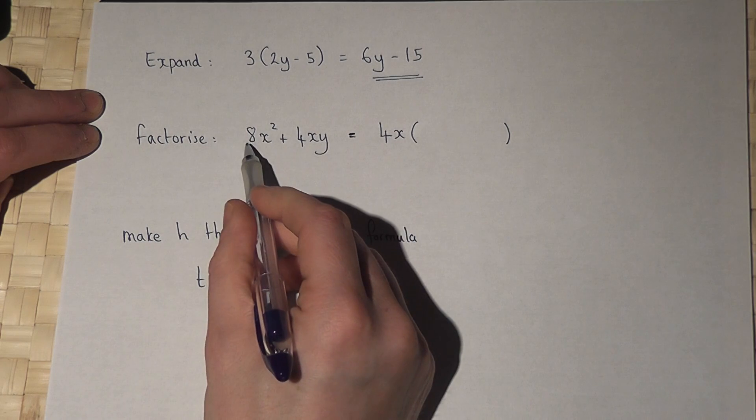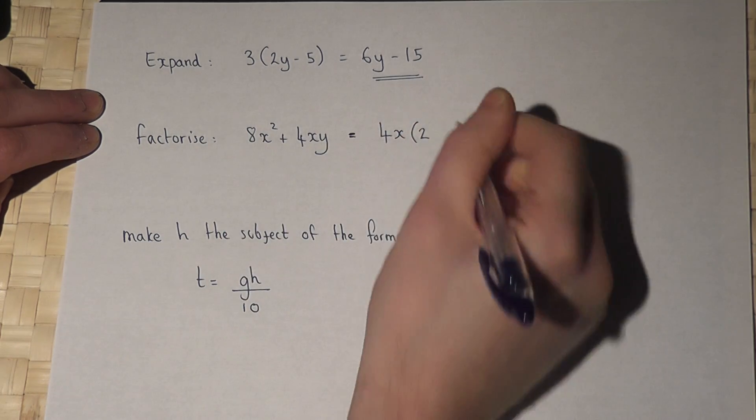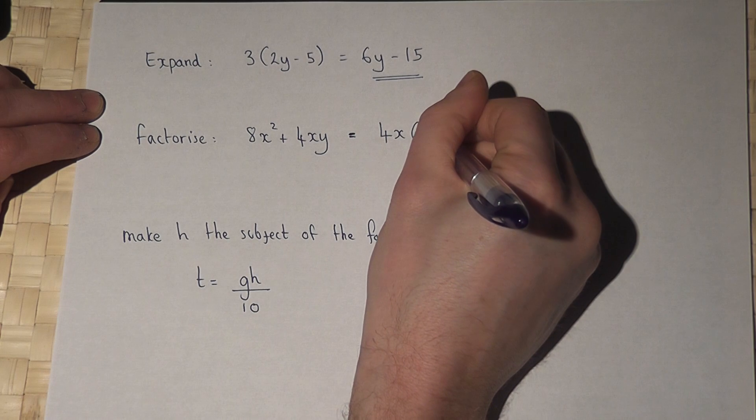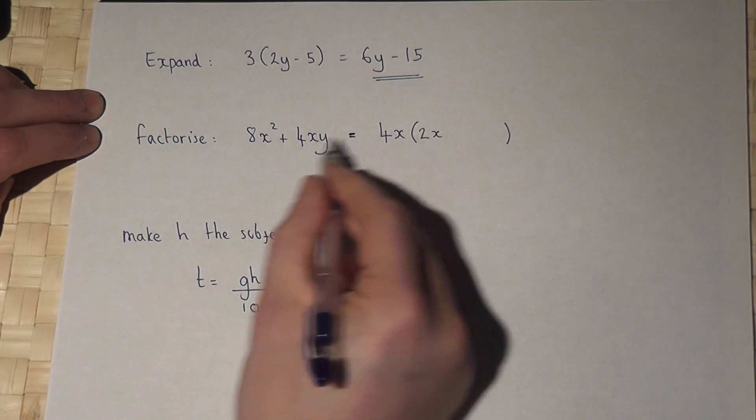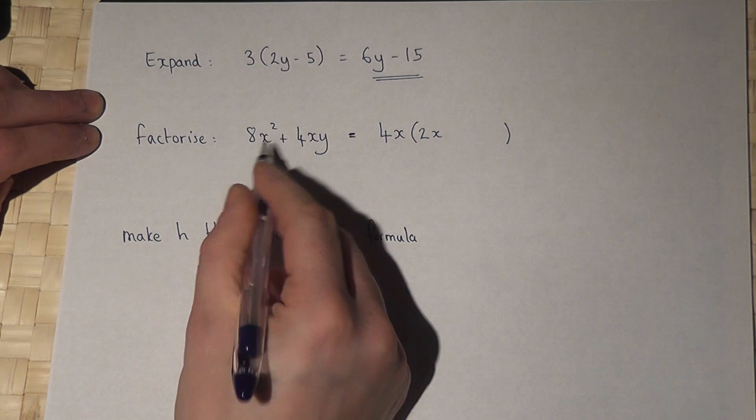Now to get an 8 requires a 2, but to get an x squared requires another x. 4 times 2 is 8, x times x is x squared.